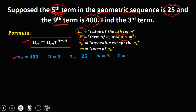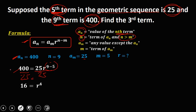Substituting into the formula: a sub n is 400, a sub m is 25, r is unknown, to the power n minus m which is 9 minus 5. Dividing both sides by 25 gives 16 equals r to the power 4. Since the exponent is 4, we take the fourth root of both sides. The fourth root of 16 is 2, so the common ratio r equals 2.